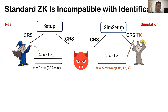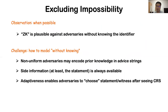Standard zero knowledge is incompatible with this identification. In the standard definition, the adversary could receive real proofs or simulated proofs that were generated without using any witness, and the statement and witness are chosen by the prover after seeing the CRS, so the identifier witness will be known to the adversary. If there is an identification functionality, the adversary can leverage it to distinguish real proofs from simulated proofs. So standard zero knowledge is out of reach. We have to rule out the case where the adversary knows the identifier. The only possible definition defends adversaries without knowing the identifier.